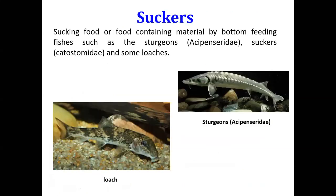The fourth feeding type is suckers. As the name suggests, they suck food or material containing food from the bottom of the water body. Their mouth structure is adapted to help in sucking food from the bottom. Sturgeons and loaches are examples of fishes with this kind of sucker feeding behavior.